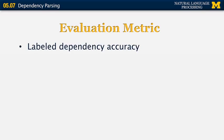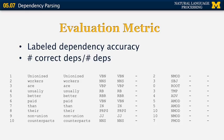For evaluation metrics, we use labeled dependency accuracy, similar to labeled constituent accuracy for traditional parsing. It's simply the number of correct dependencies divided by the total number of dependencies. In the standard representation format: the first column is word number, the second is the word, the third is its head, followed by part of speech, head number, and dependency label. For example, 'unionized' modifies 'workers' — word one modifying word two — with dependency label 'nmod.'